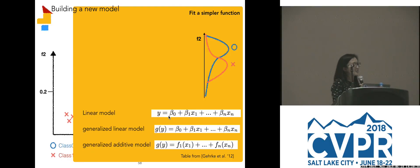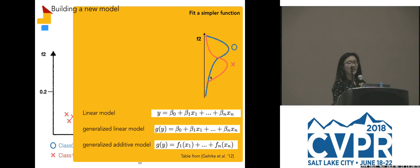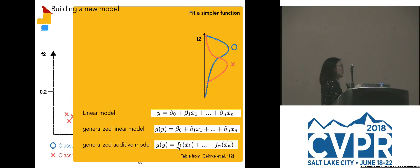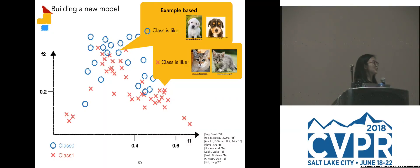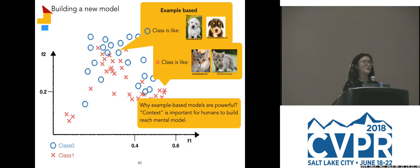There's something called a generalized linear model — logistic regression is a type of generalized linear model. In addition to learning the coefficient, you also learn a function for your target variable y. And what's called a generalized additive model (GAM) goes further: in addition to learning your function g, you also learn a function f for each of your features. You can constrain this f to have sparsity, monotonicity, or other constraints. Another method is to use examples. I can say blue classes are like these pictures — actual training data points. The reason examples are powerful has a lot of evidence in cognitive science: humans think and act in examples, especially experts like firefighters. Examples give you context.